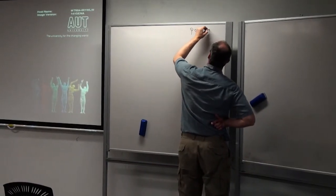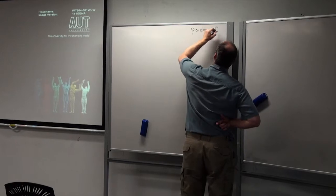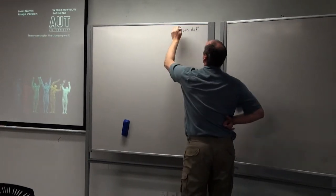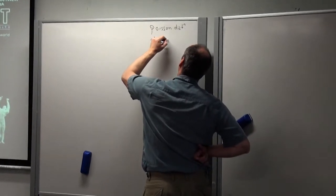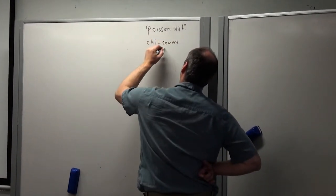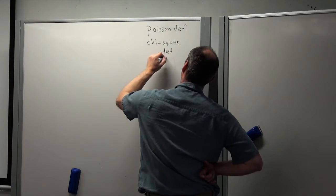Poisson distribution. Poison. It means fish in French. And also the chi-squared, both the test and the distribution itself.